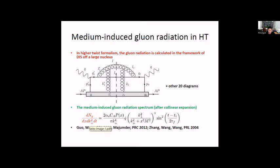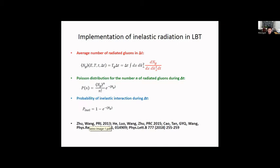In the LBT model we use the Boltzmann equation and implement it with a Monte Carlo method. From the radiation spectrum we calculate the average gluon number in a given time step—the radiation rate times delta-t. From this average gluon emission number we sample the number of radiated gluons using a Poisson distribution. The probability for inelastic scattering during a time step is given by one minus e to the minus the average gluon number.